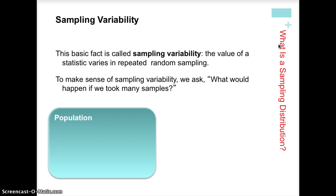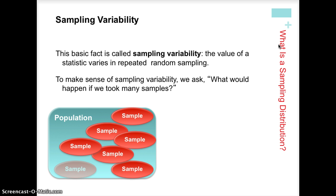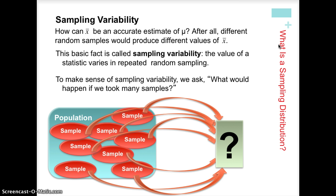Let's talk a little more about sampling variability. We know that every time we get a sample we get a different value. So what would happen if we took many, many samples? They would all have different values. How can our x-bar — all of them different — be an accurate estimate of mu? Because they all have different values, what we're going to look at is a distribution of all of those samples.